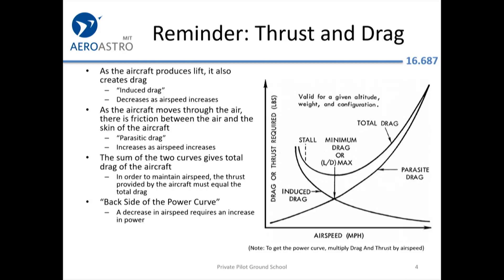Here's a reminder of thrust and drag. Whenever you're generating lift, you're also generating some drag — that's lift in the unwanted direction of backwards. The aircraft is also producing parasitic drag by trying to punch its way through this viscous fluid of air. Where these summed-up drag curves intersect is pretty much the bottom of the total drag curve — the minimum drag, or L over D max.